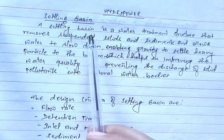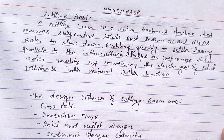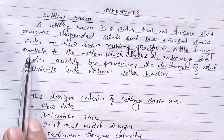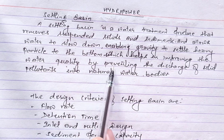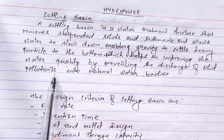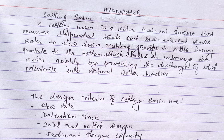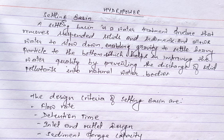What is a settling basin? A settling basin is a water treatment structure that removes suspended solids and sediments and allows water to slow down, enabling gravity to settle heavy particles to the bottom, which helps in improving water quality by preventing the discharge of solid pollutants into natural water bodies. The basic principle is to slow down water flow, allowing gravity to settle suspended solid particles to the bottom, thereby removing sediments and pollutants.